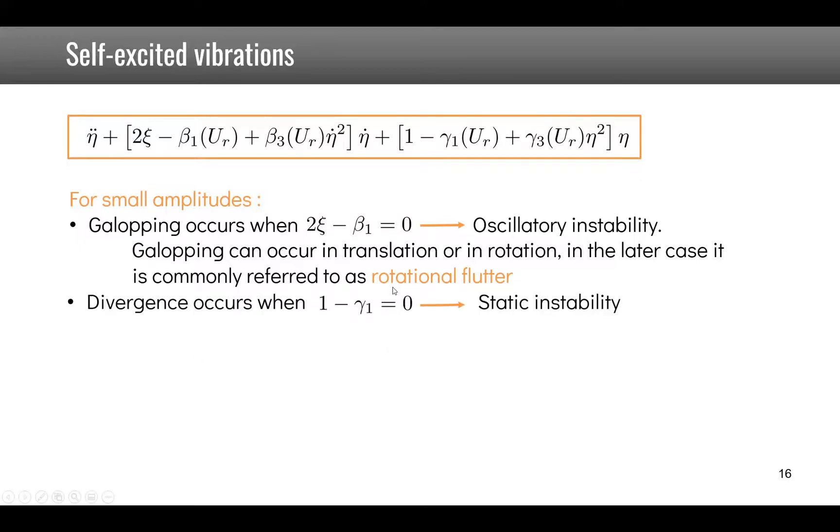Divergence occurs when the stiffness term becomes zero so this is a static instability and again here we are looking at the first two terms to determine this limit of stability.